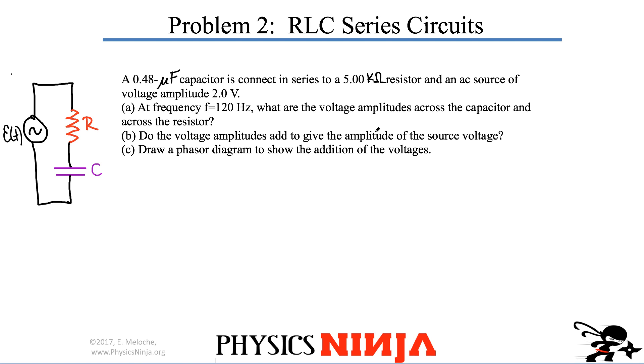All right, here's the next problem. It says we have a 0.48 microfarad capacitor connected in series to a resistor. The value of the resistance is 5 kilo ohms. There's also an AC source here that has an amplitude of 2 volts. The AC source has a frequency of 120 hertz. We want to know the voltage amplitudes across the resistor and across the capacitor.